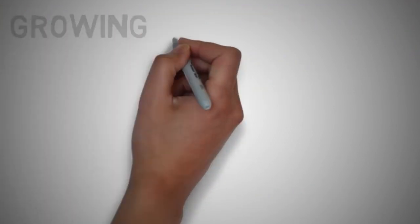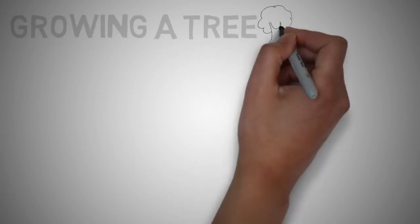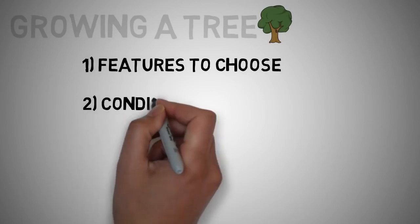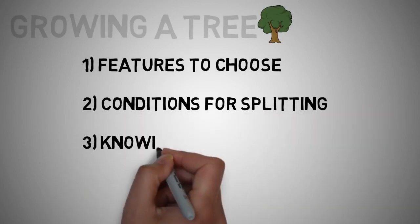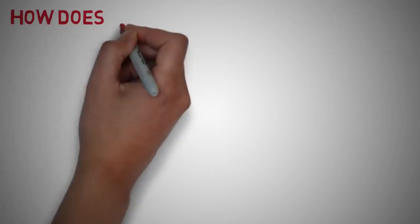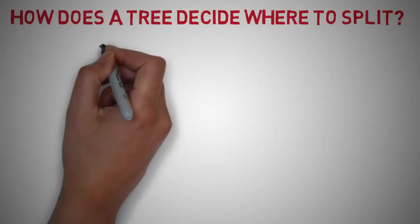What's actually going on in the background? Growing a tree involves deciding on which features to choose and what conditions to use for splitting, along with knowing when to stop. As a tree generally grows arbitrarily, you need to trim it down for it to look beautiful.